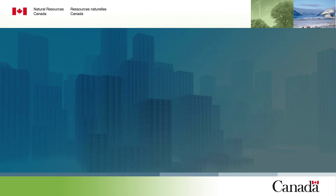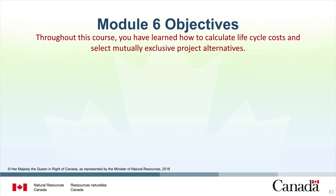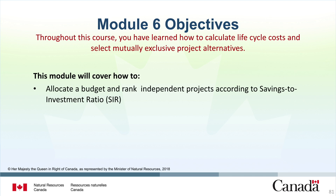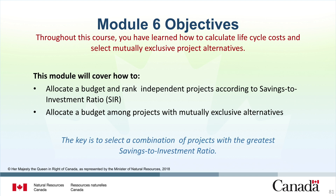That concludes Module 5 and we move to Module 6 on Allocating Investment Funds Among Competing Projects. What happens when you determine that multiple project alternatives are lifecycle cost effective? How can projects be prioritized so the best decision for allocating project funding can be made? This module will introduce the best methods to select options among mutually exclusive projects to match your budget. You have learned how to calculate lifecycle costs and supplementary economic measures, and select mutually exclusive project alternatives. This module will demonstrate how to allocate a budget and rank independent projects according to savings-to-investment ratio, and how to allocate a budget between a combination of independent and mutually exclusive projects.